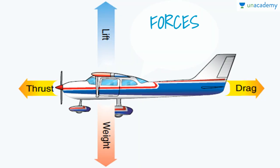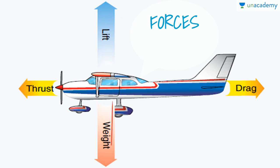This is how the forces act: lift acts upward, weight acts downward, thrust and drag act horizontally. Weight includes the airplane itself, the payload, and the fuel. Since fuel is consumed as the airplane flies, the weight decreases. The weight acts in a direction toward the center of the earth.